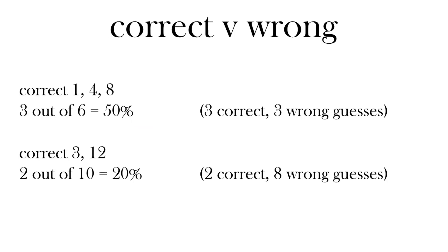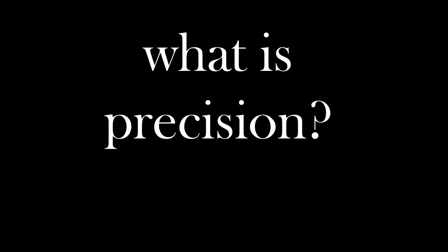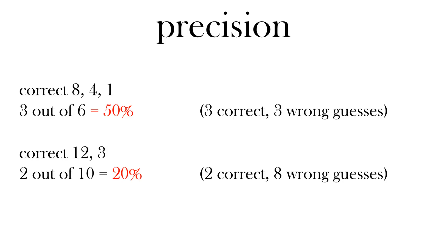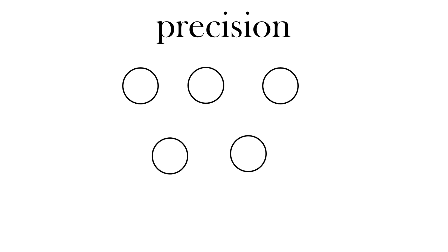So we had 3 out of 6 - 3 correct and 3 wrong guesses. The second time we had 2 correct but 8 wrong guesses. So what is precision? In the first example we had 3 out of 6, so precision was 50%. The second example we had 2 out of 10, so precision was 20%.